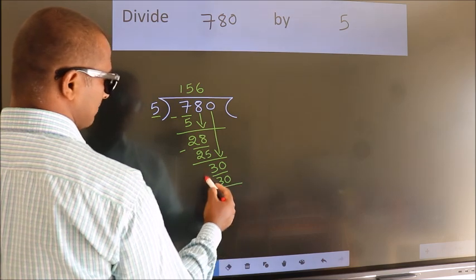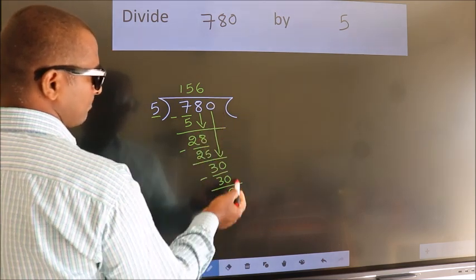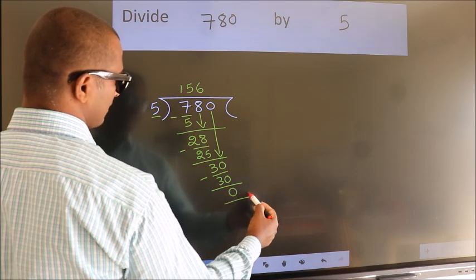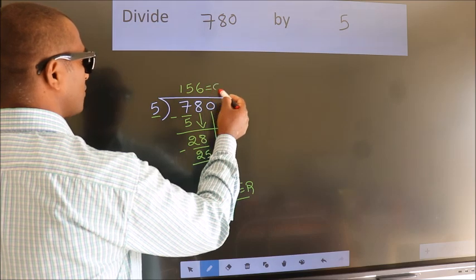Now we subtract. We get 0. No more numbers to bring down, so we stop here. This is our remainder. This is our quotient.